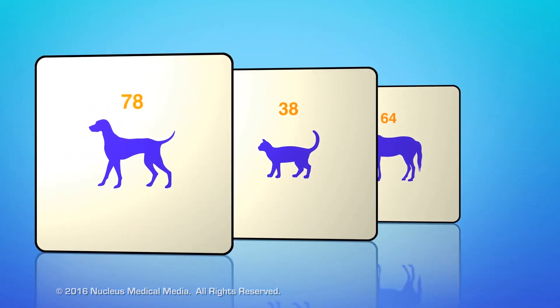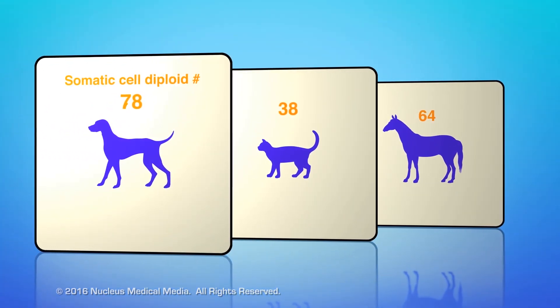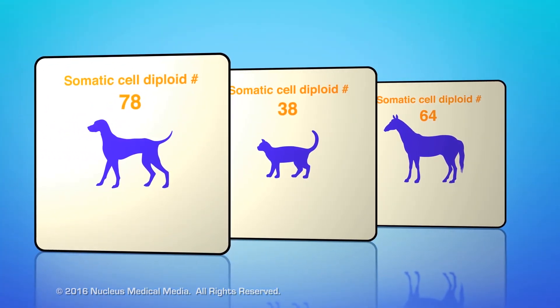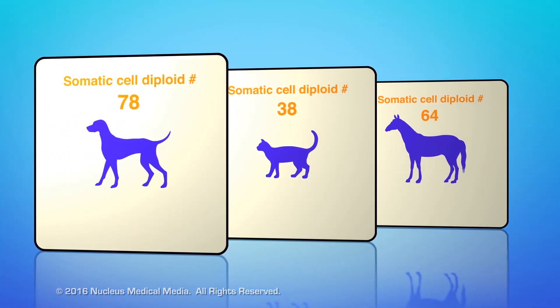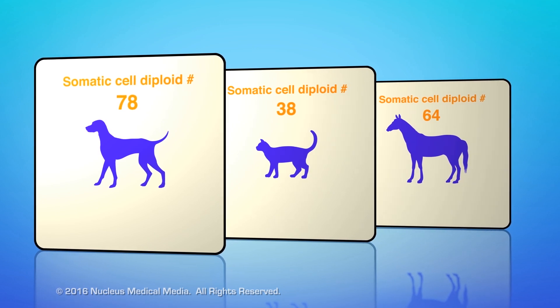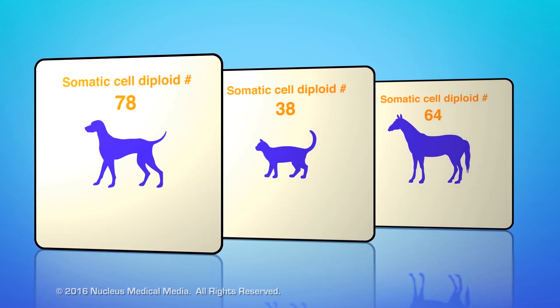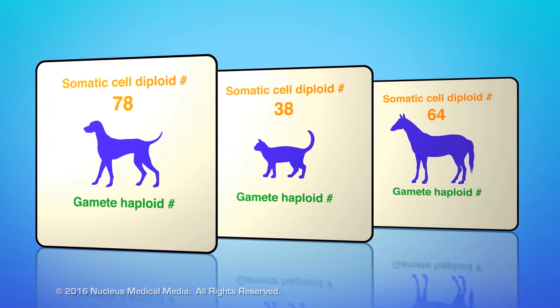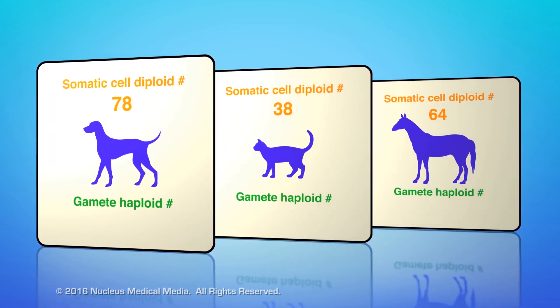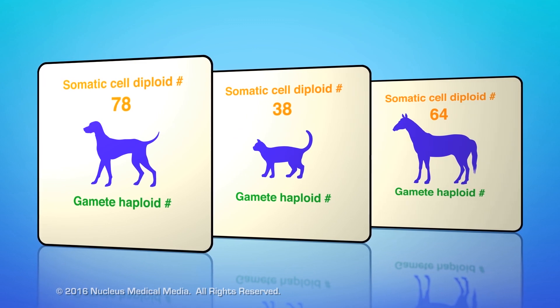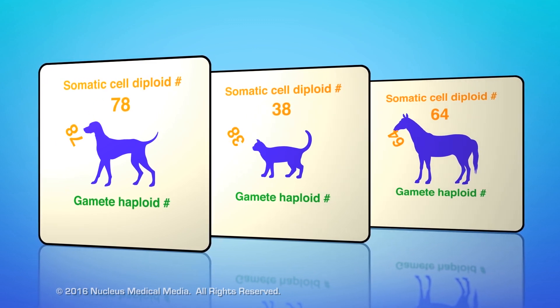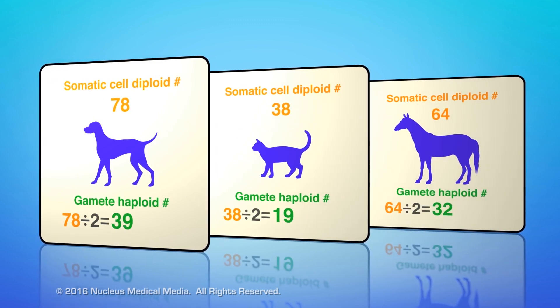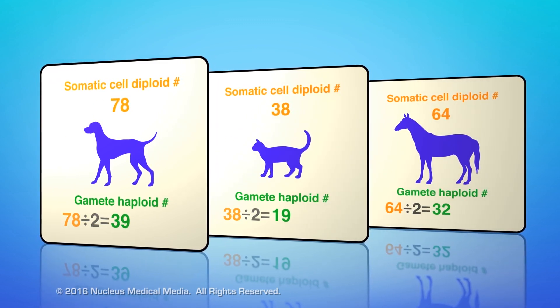Other organisms have somatic cells with different diploid numbers of chromosomes. But the gametes in these organisms are haploid, meaning they always have half the diploid number of chromosomes.